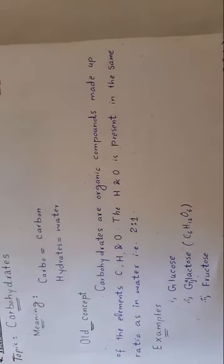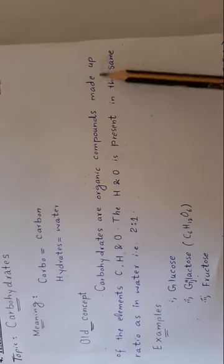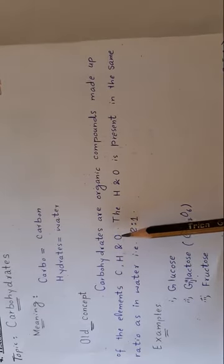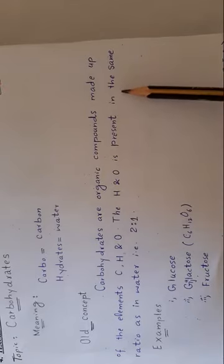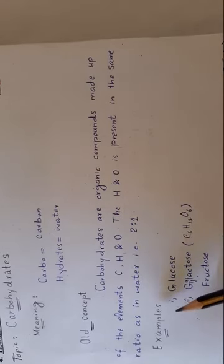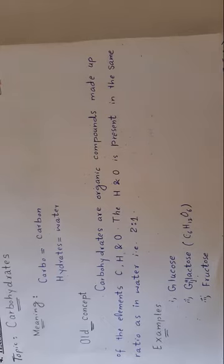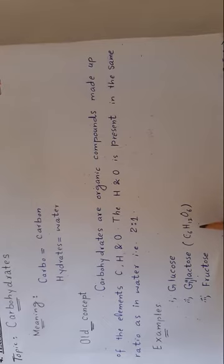According to the old concept, carbohydrates are organic compounds made up of the elements carbon, hydrogen, and oxygen. The hydrogen and oxygen are present in the same ratio as in water, that is 2:1. Examples of carbohydrates are glucose, galactose, and fructose. These three molecules have the same molecular formula C6H12O6. These are simple sugars called monosaccharides, in which hydrogen and oxygen are present in the ratio 2:1, as in water.